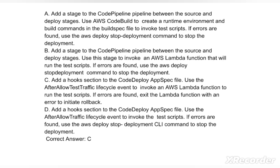Option C: Add a hook section to the CodeDeploy AppSpec file. Use the AfterAllowTestTraffic lifecycle event to invoke an AWS Lambda function to run the deployment test scripts. If errors are found, exit the Lambda function with an error to initiate rollback.